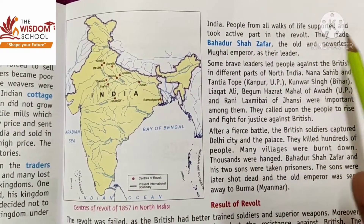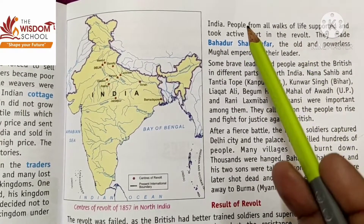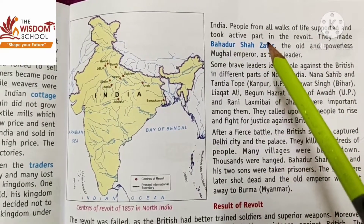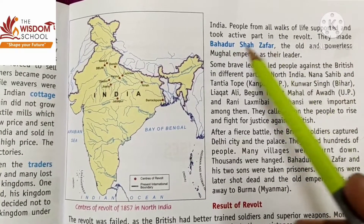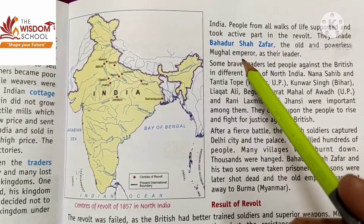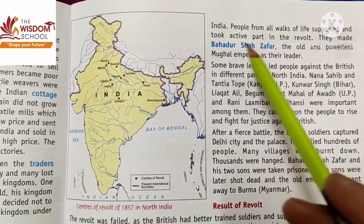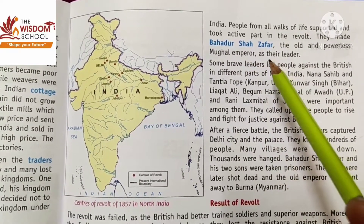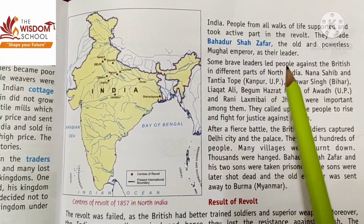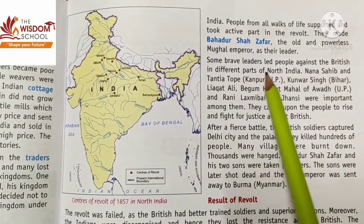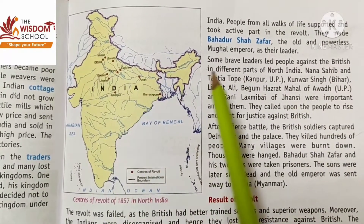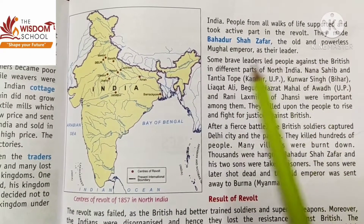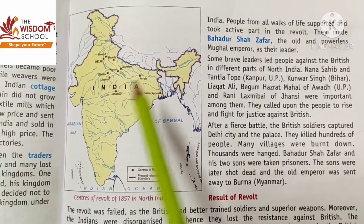People from all walks of life supported and took active part in the revolt. They made Bahadur Shah Zafar, the old and powerless Mughal emperor, the leader. Some brave leaders led people against the British in different parts of north India.